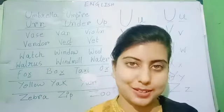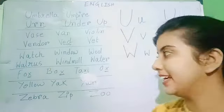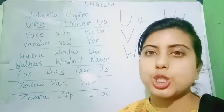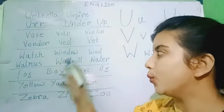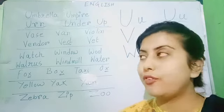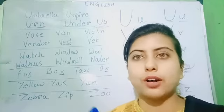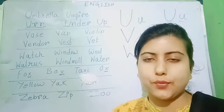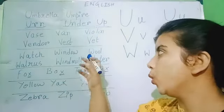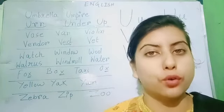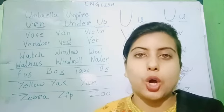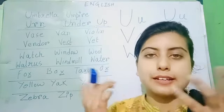We will look at some words with W. The first one is watch. W-A-T-C-H. Watch. Watch is the machine that shows us time. W-I-N-D-O-W. Window. Window is the passage of our room where the wind comes from. We have windows in every room that let the air come. Wool. W-O-O-L. Wool. Wool is the material that is used to make woolen sweaters.